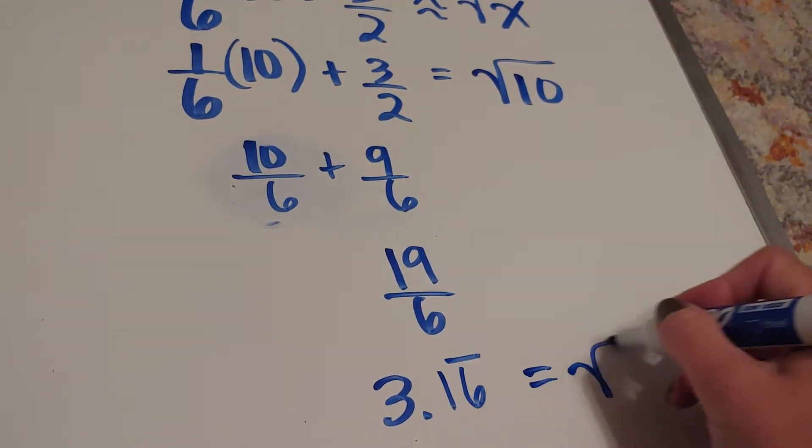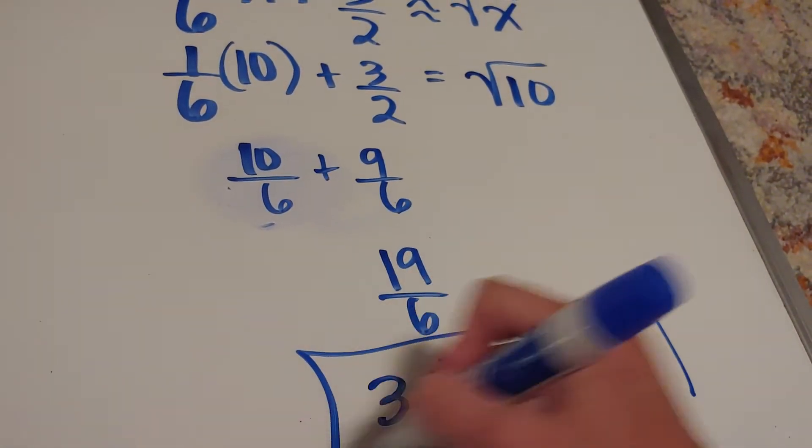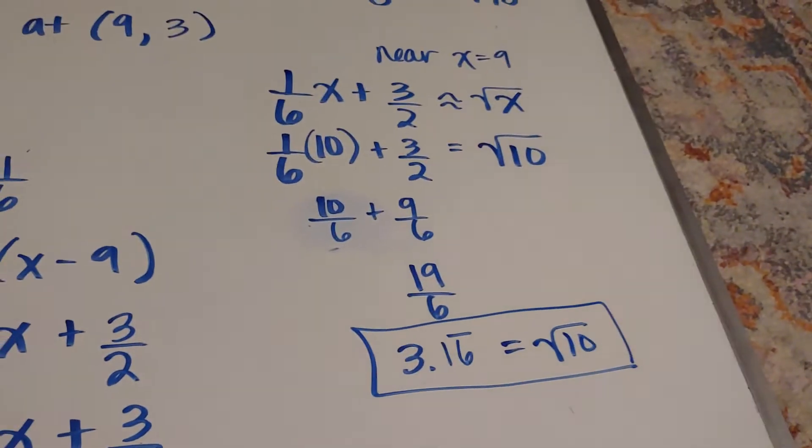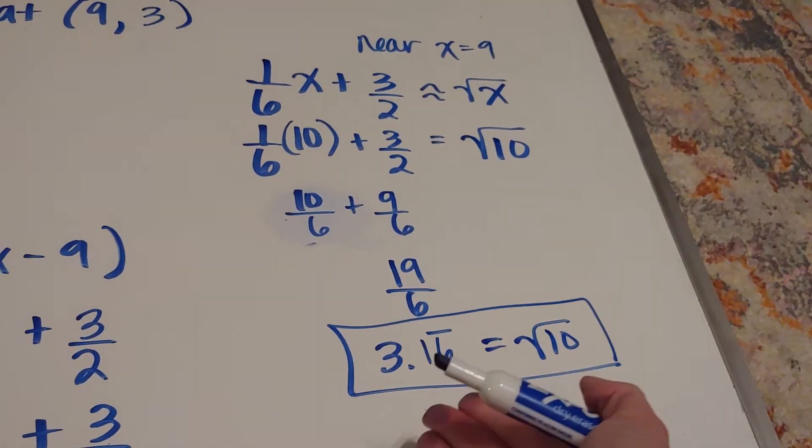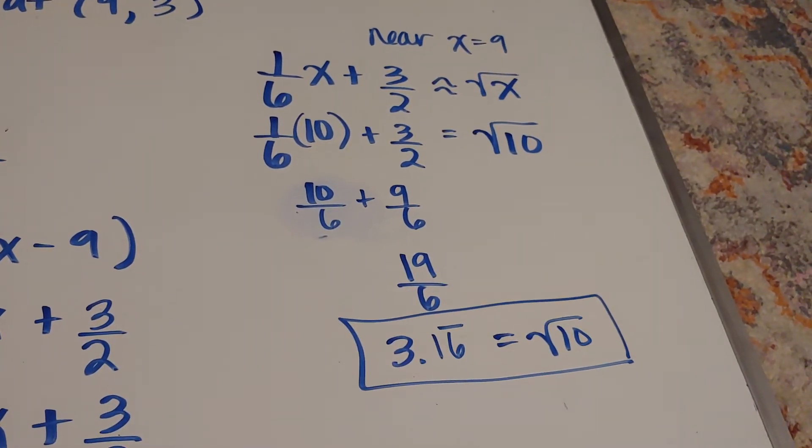So that's what the square root of 10 equals. What would have happened is in a book of values, it would have had the square root of 10 is approximately 3.16 repeating.